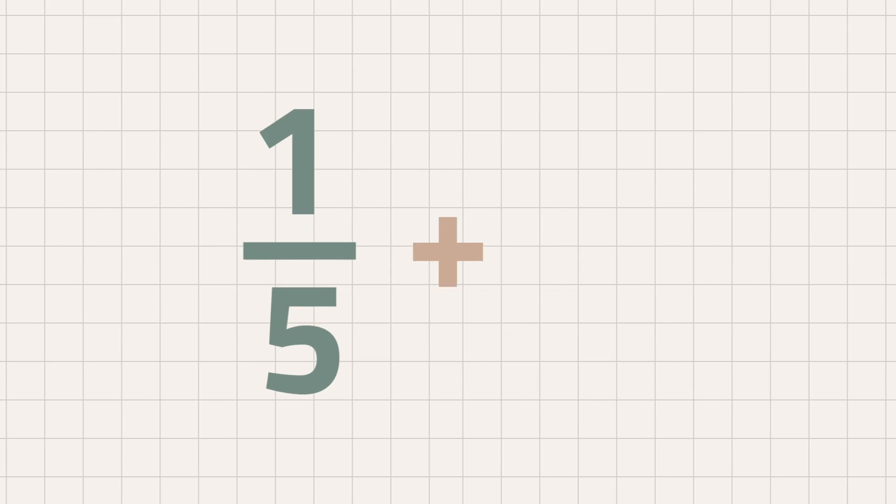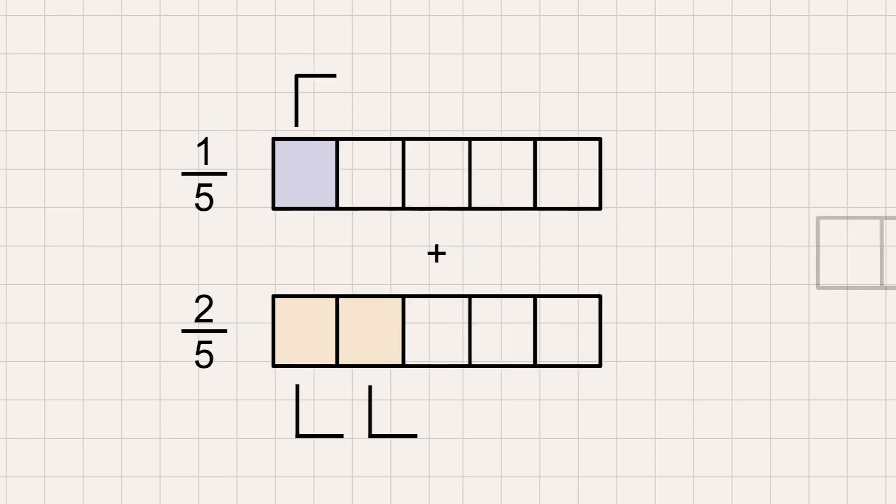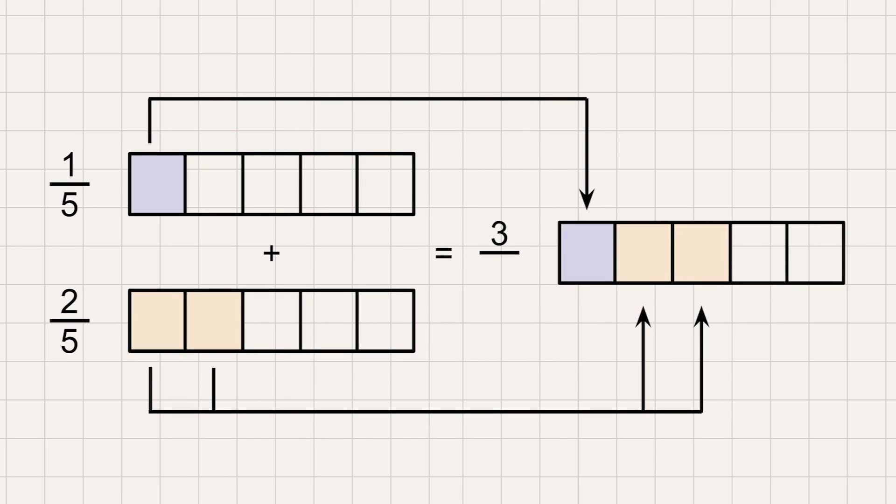Now, let's try adding one-fifth with two-fifths. As a number sentence, it looks like this. Since the denominators are the same, we just have to add the numerators. One plus two equals three. Then, copy the denominator, which is five.